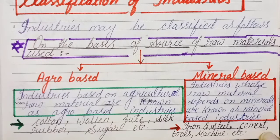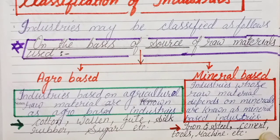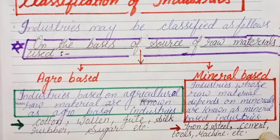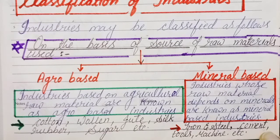Industries whose raw materials come from agriculture products are known as agro-based industries. For example, cotton is an agriculture product. Other examples include woolen, jute, silk, rubber, and sugar. All these are agricultural products, and the industries which use these agricultural products as raw materials are called agro-based industries.